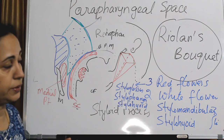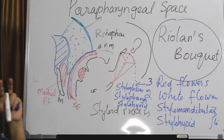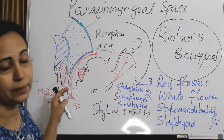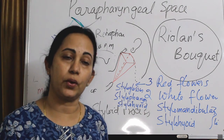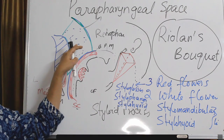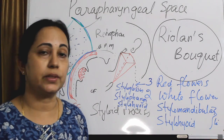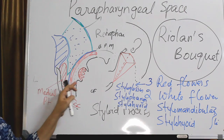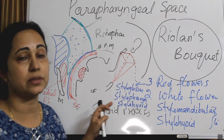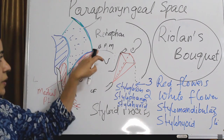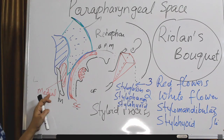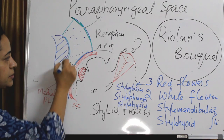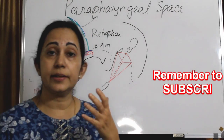The stylomandibular ligament forms a tunnel, and through this tunnel the deep lobe of the parotid gland projects into the parapharyngeal space. That is why tumors of the deep lobe of the parotid gland push the pharynx medially. The anterior relation of the parapharyngeal space is the pterygomandibular raphe — the superficial layer of deep cervical fascia covering the medial pterygoid muscle anteriorly.